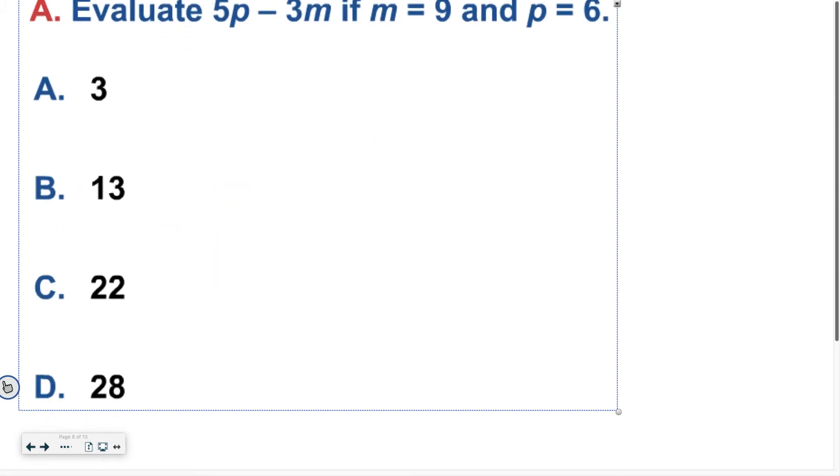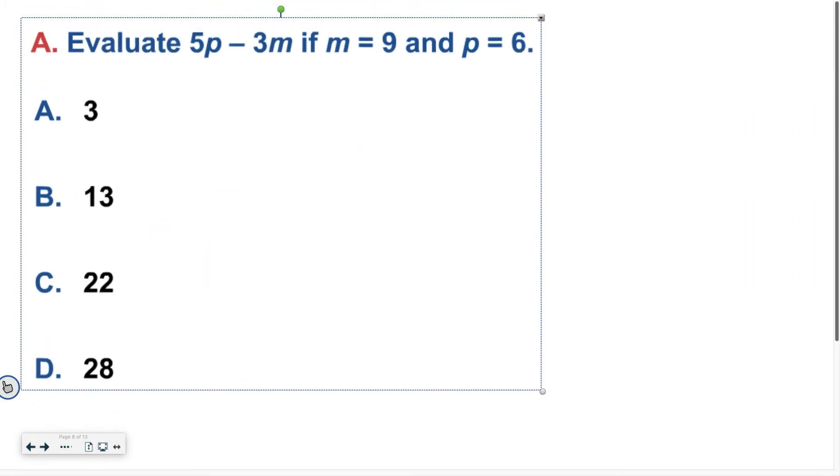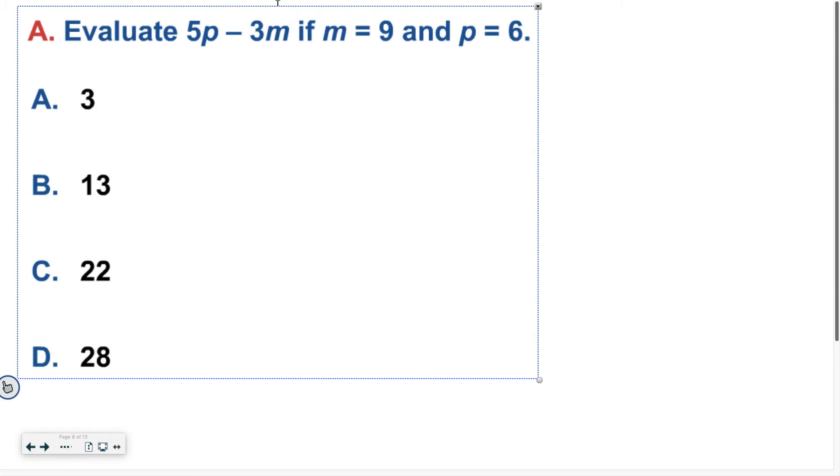So this is another example where you get to try it. So evaluate 5P minus 3M if M equals 9 and P equals 6. Good luck. Hopefully you ended up at 3 or letter A. You did 5 times 6 to get 30, and then you did 3 times 9 to get 27, and you subtracted them.